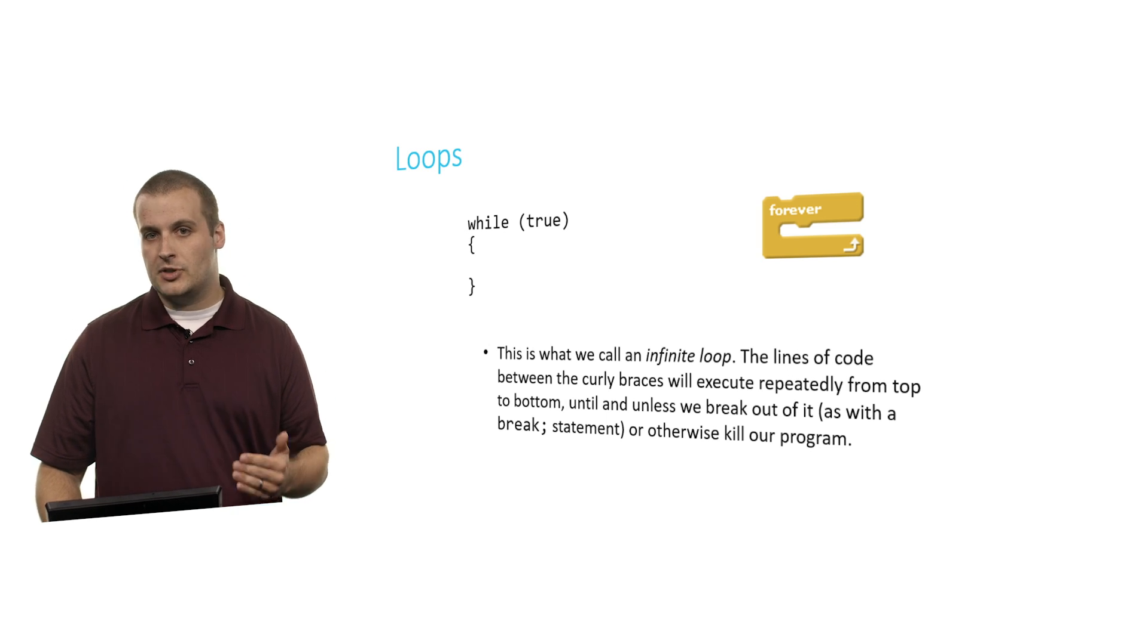First is forever from Scratch, which compares to while true. This is what we call an infinite loop. The lines of code between the curly braces, much like the puzzle pieces that fit inside the C of the forever block, will execute repeatedly from top to bottom over and over and over forever. After all, if you recall from our discussion of Boolean expressions, true is always true. So if we're doing something so long as true is true, which seems a little silly, true is always true. So it'll always run. It'll run forever and ever and ever until we find a way to break out of it with a break statement, which again, we saw a little while ago when we were talking about switch, or otherwise just kill our program.